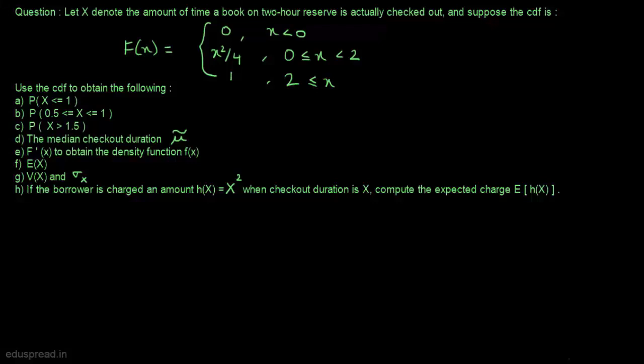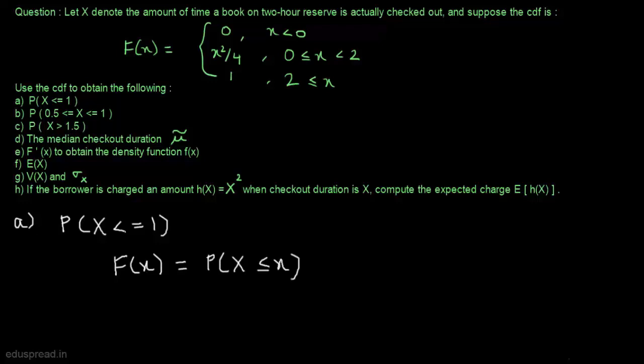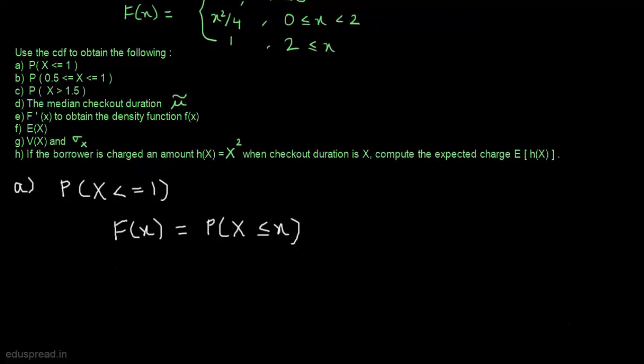In this video, I am going to solve this question. Let X denote the amount of time a book on 2-hour reserve is actually checked out, and suppose the CDF is given. In part A, we have to find the probability that X is less than or equal to 1. We know that F of X is the cumulative distribution function, equal to the probability that X is less than or equal to x. So to find P(X ≤ 1), we calculate F(1).